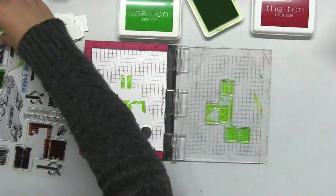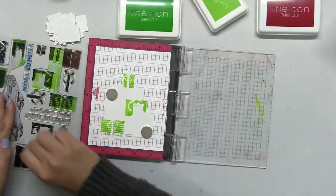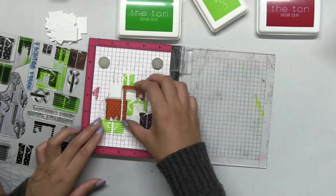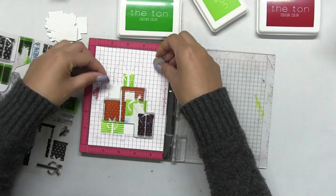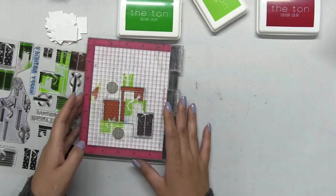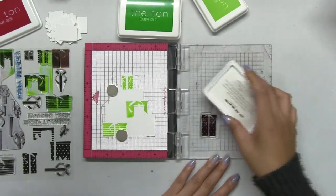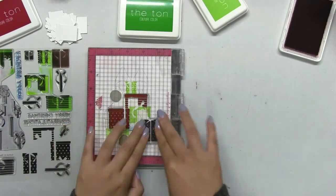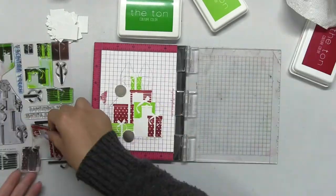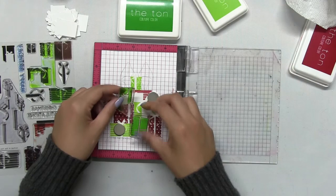Now this is a different kind of layering stamp set that you might not be used to. Instead of that traditional layering over each other to get a dimensional look, we're going to be piecing together the looks by stamping each layer. It's kind of like a puzzle.